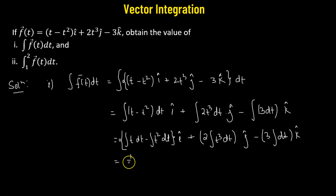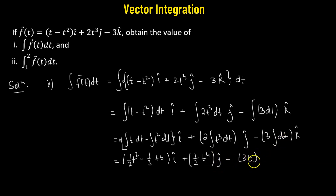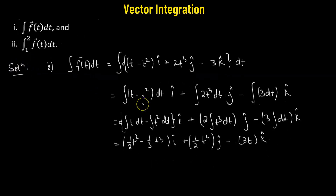Now let's find the integrals. The x-component gives (1/2)t squared minus (1/3)t cubed, multiplied by i-cap. The y-component gives 2 divided by 4, which is (1/2)t to the power of 4, multiplied by j-cap. The z-component gives negative 3t, multiplied by k-cap. So this is the value of our indefinite integral of the vector-valued function f(t) with respect to t.